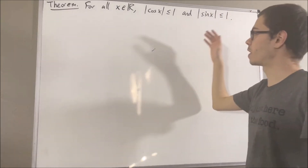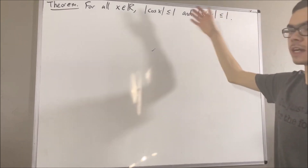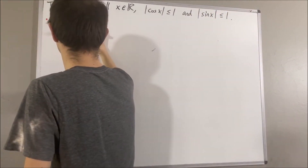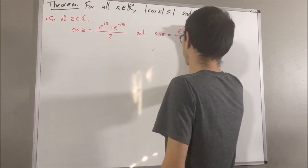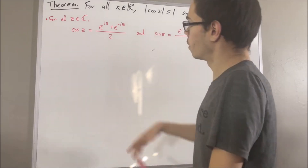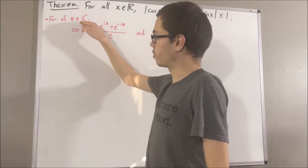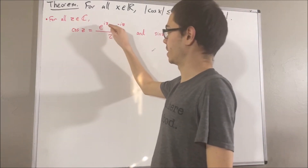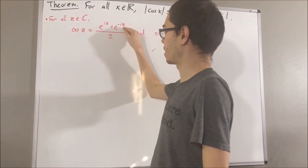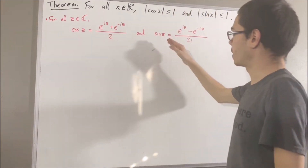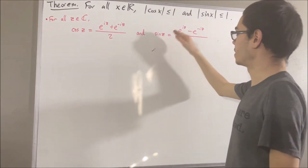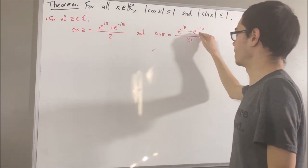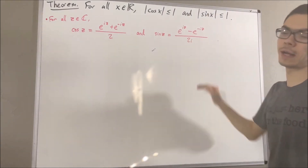Now first, let's remind ourselves of our definition of sine and cosine. For each complex number z, we define cosine of z to be e to the iz plus e to the negative iz over 2, and we define sine of z to be e to the iz minus e to the negative iz over 2i.